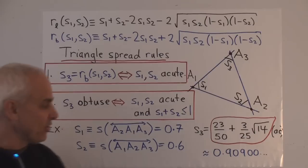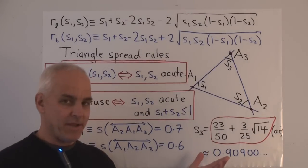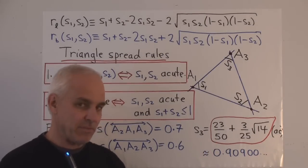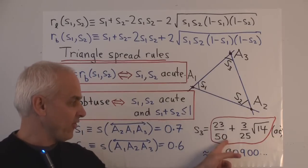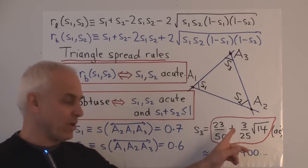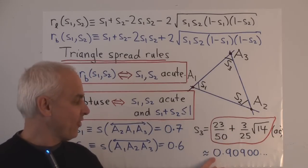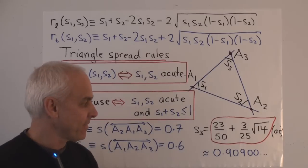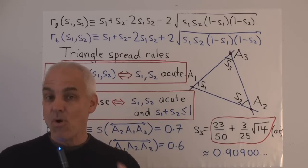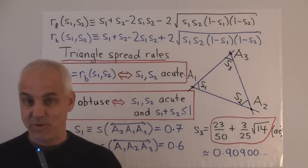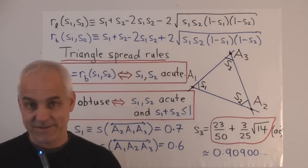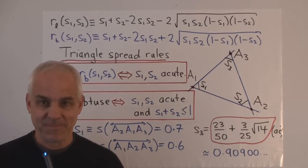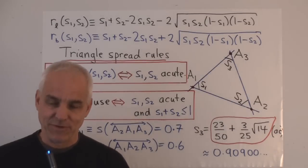You might be used in ordinary trigonometry to writing out decimal approximations, but I much prefer this exact form — this is the accurate answer, whereas a decimal is only an approximation. Next time, we're going to see some more examples of how these triangle spread rules work in practice. I hope you'll join me for that. I'm Norman Wildberger. Thanks for listening.